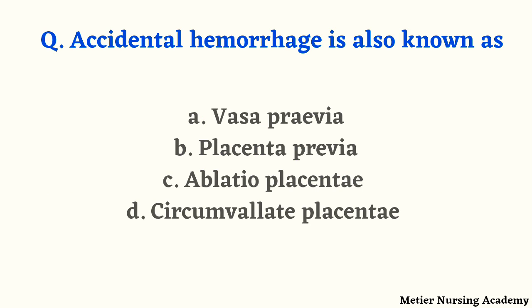Accidental hemorrhage is also known as — vasa previa, placenta previa, ablatio placenta, or circumvallate placenta? This is a direct question and the right answer is option C, ablatio placenta.